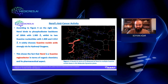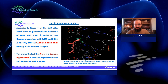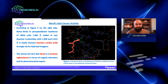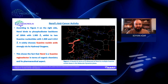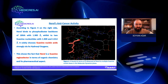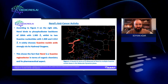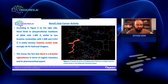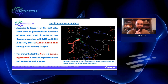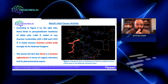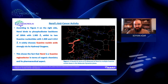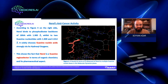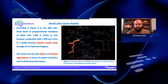As can be seen in figure 4 on the right side, Nerol binds to the phosphodiester backbone of the DNA with a close hydrogen bonding distance of 1.9 angstroms, while two guanine nucleotides with distances of 1.9 and 2.0 angstroms are followed as well. It solely chooses guanine nucleic acids strongly via its hydroxyl oxygens, proving that Nerol is a guanine rigid selector in terms of organic chemistry and its pharmaceutical aspect.